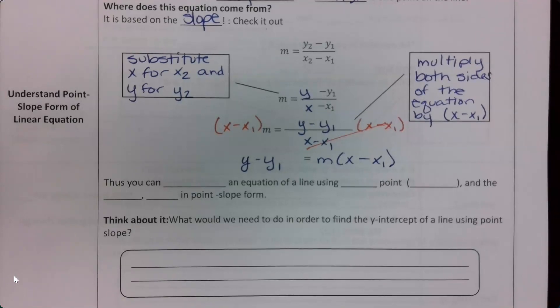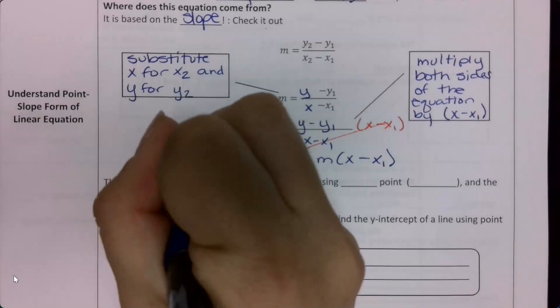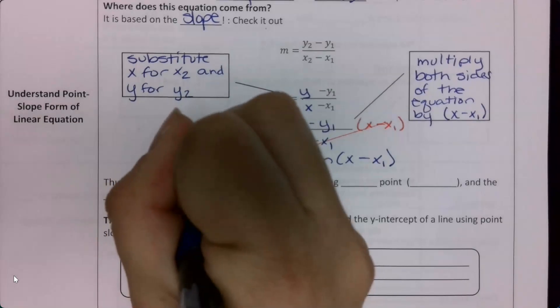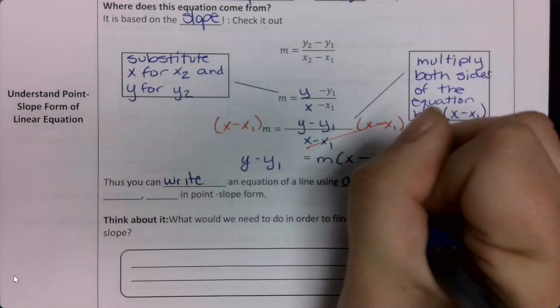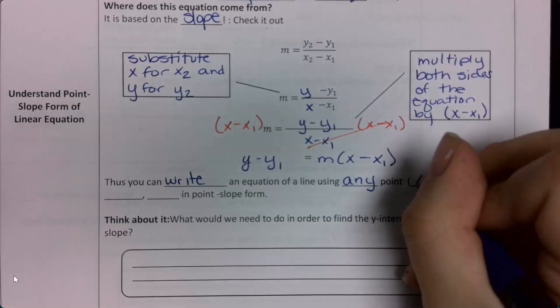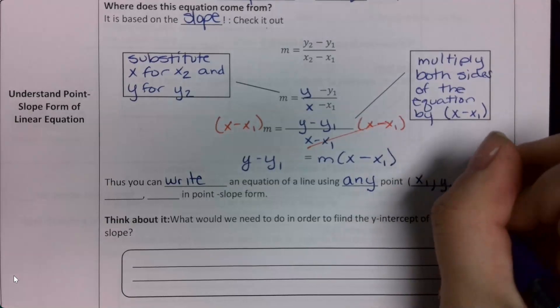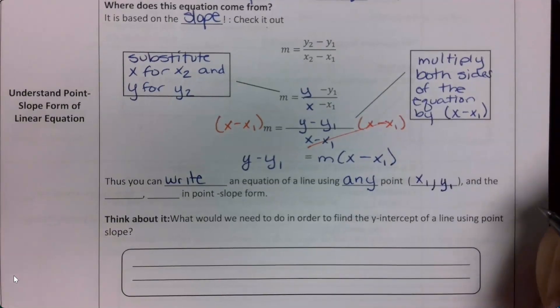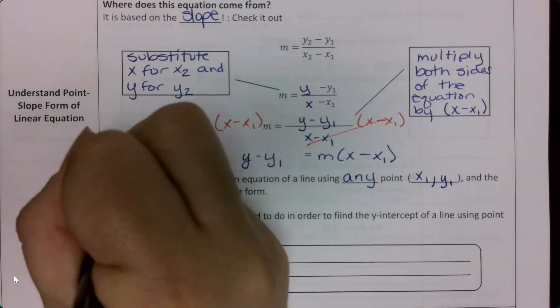So we can write an equation of a line using any point, which is x1, y1, and the slope m — that's point-slope form.